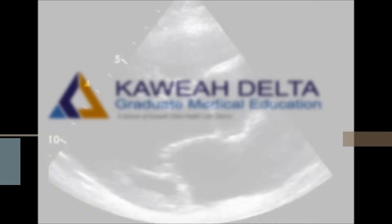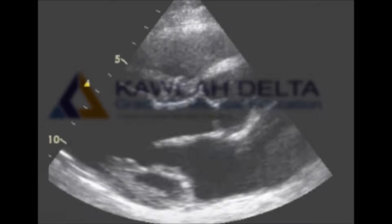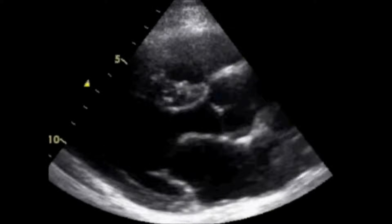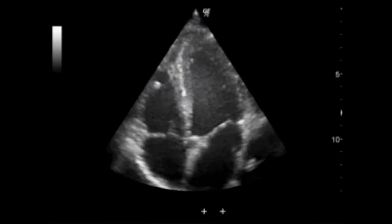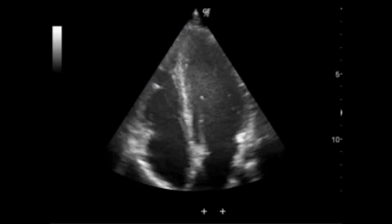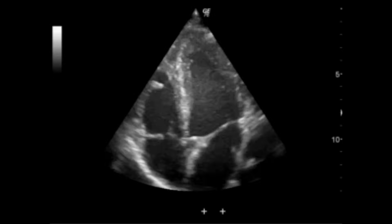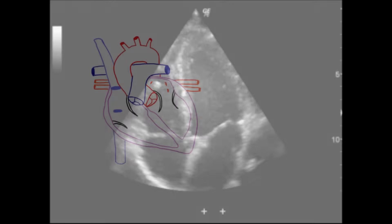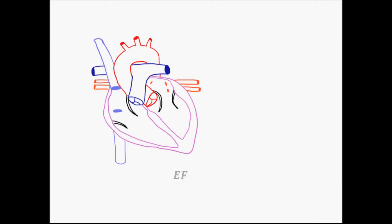Point-of-care ultrasound gives us the ability to perform bedside echocardiography in the emergency department, and this gives us valuable information into our patient's hemodynamic status. Specifically, the ultrasound machine allows us to quickly and easily estimate a left ventricular ejection fraction. But in order to understand the significance of ejection fraction, we have to go back to some of the basics of hemodynamics.